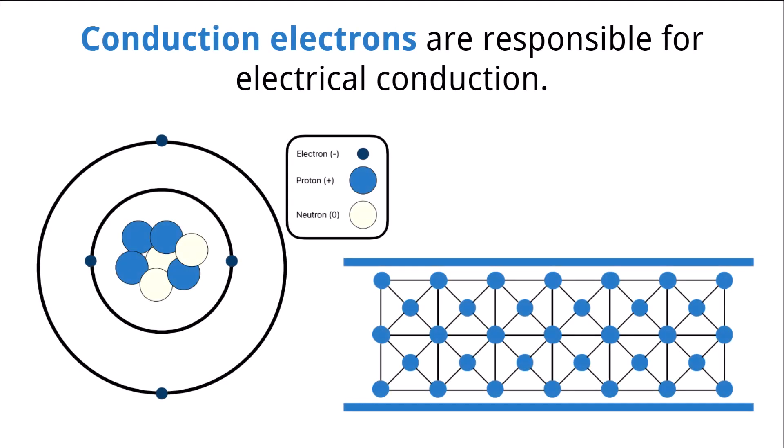To begin our understanding of current and circuits, we must understand that all materials are made of atoms. Those atoms are composed of three basic particles: protons, neutrons, and electrons. The protons and neutrons are found in the middle of the atom called the nucleus, with electrons orbiting at different distances.